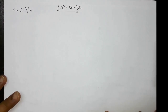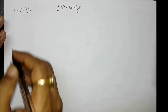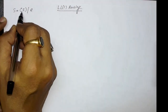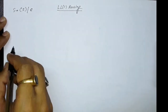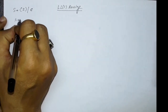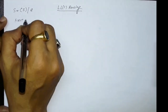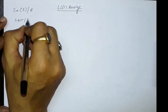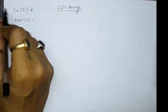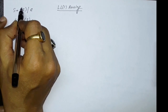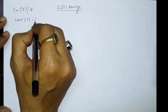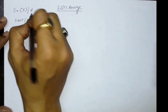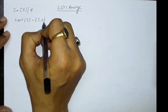Let's try to do LL1 parsing with the help of a grammar. The grammar is given: S produces opening bracket S closing bracket, and epsilon. First, let's find the FIRST set. S is the only non-terminal symbol. FIRST of S means FIRST of the right-hand side, which contains the opening bracket. Epsilon will also be in FIRST of S.